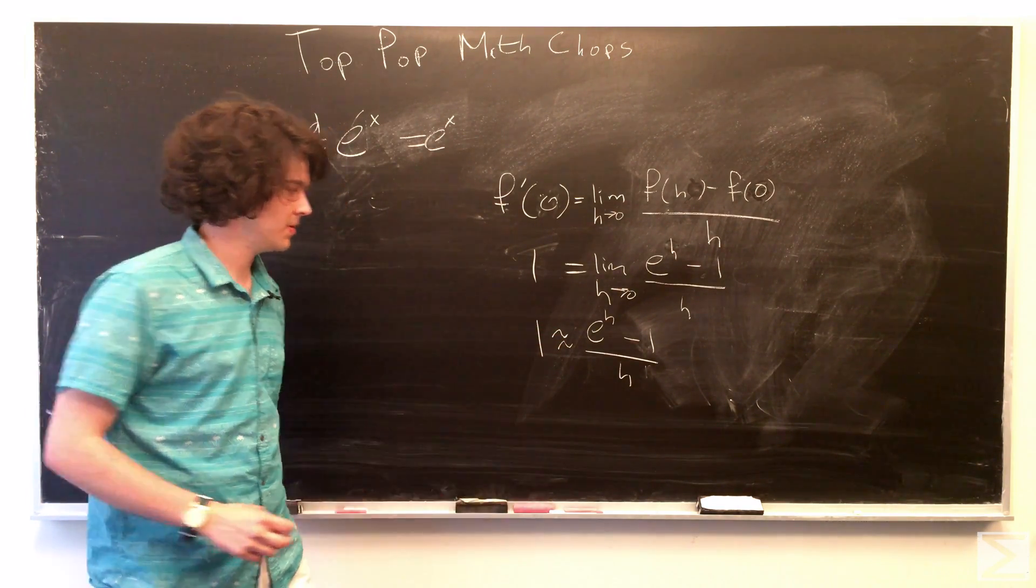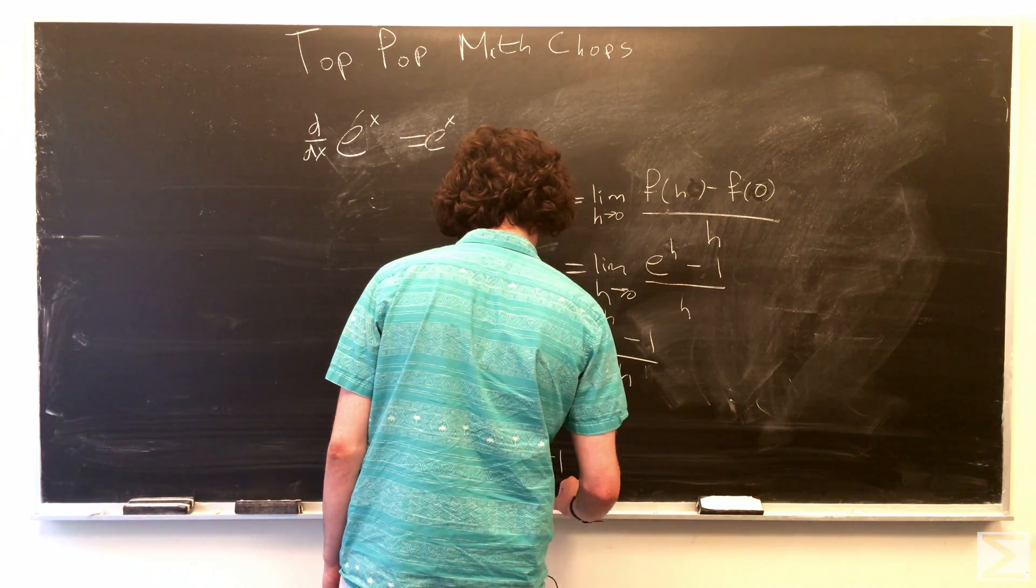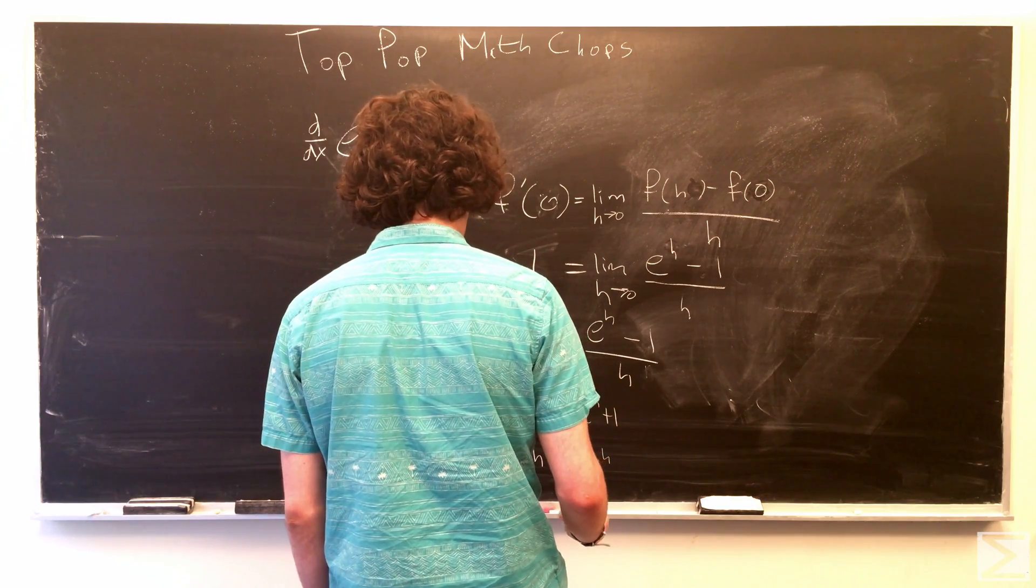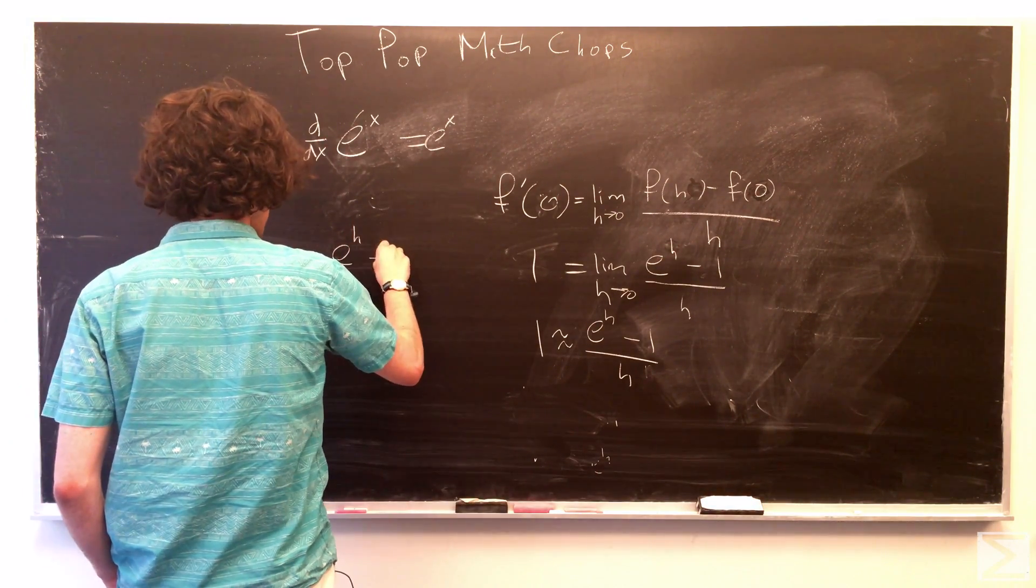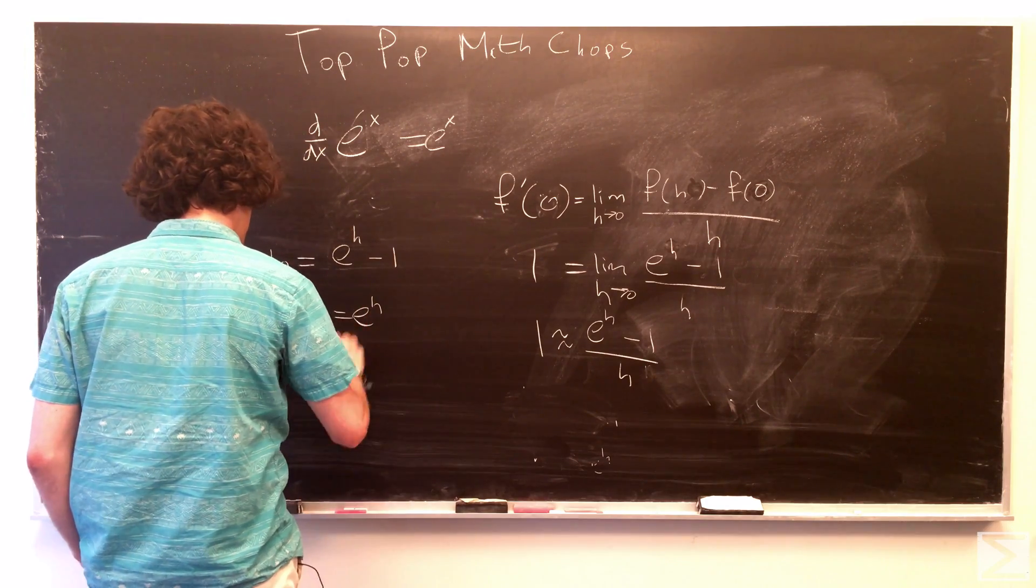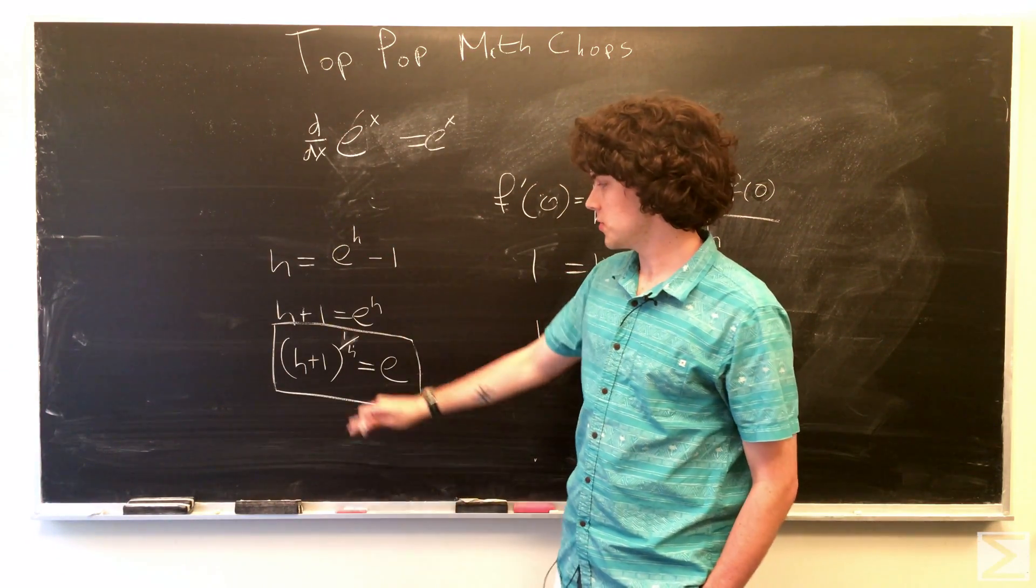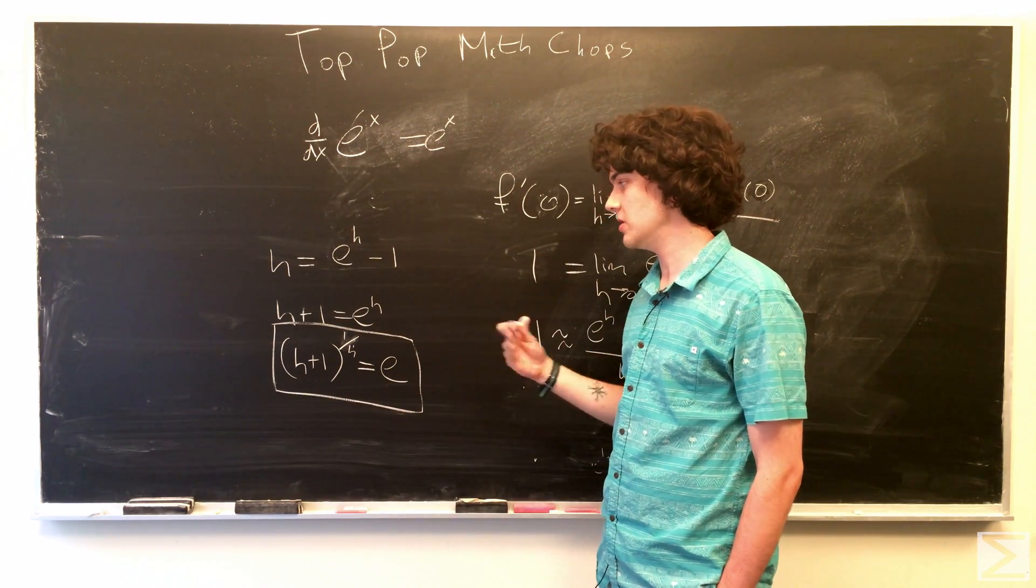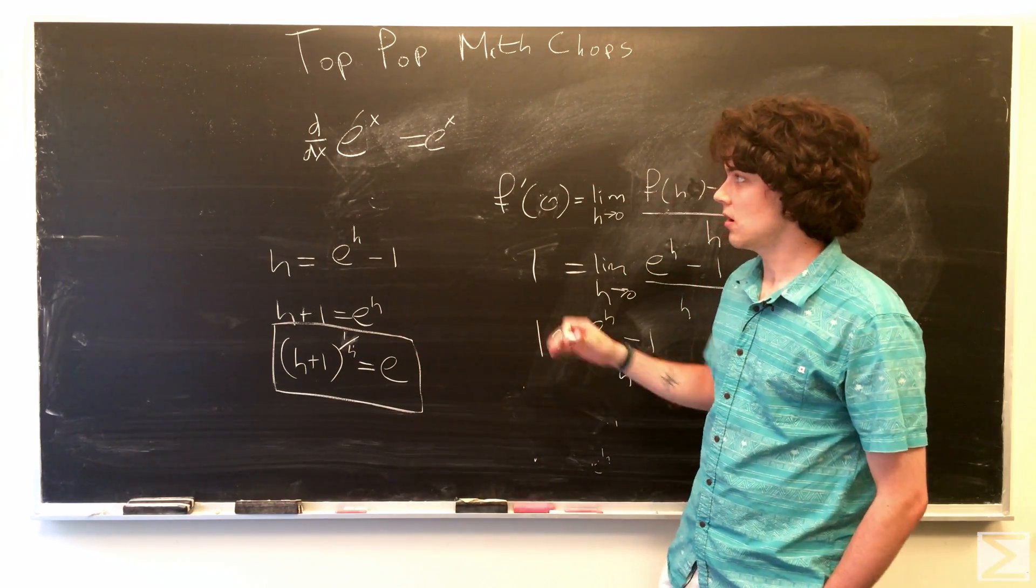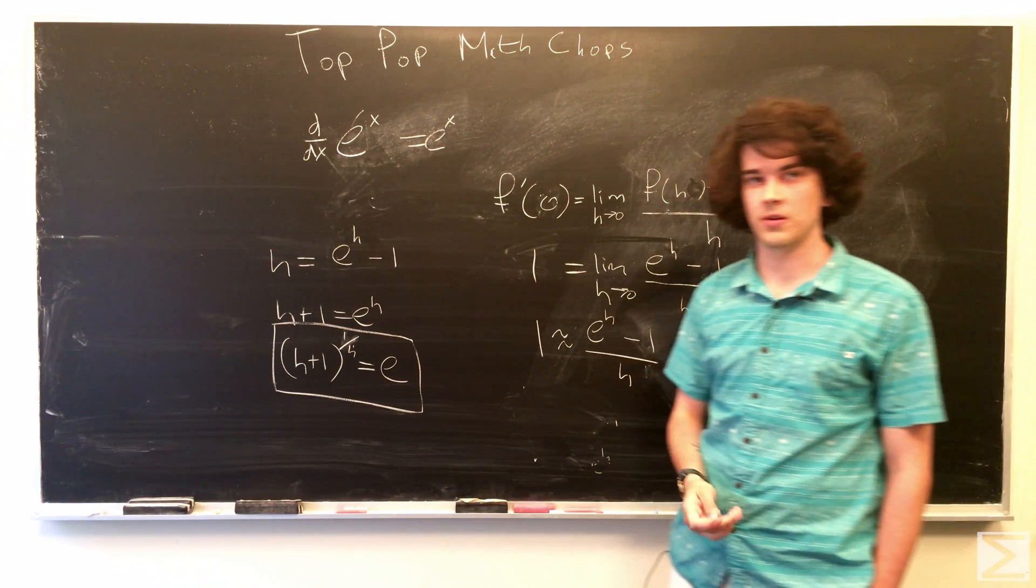And then we can manipulate this as such. And, of course, we have h plus 1 raised to the power of 1 over h is equal to e. This is just using our definition of e here and a classical definition of our derivative.